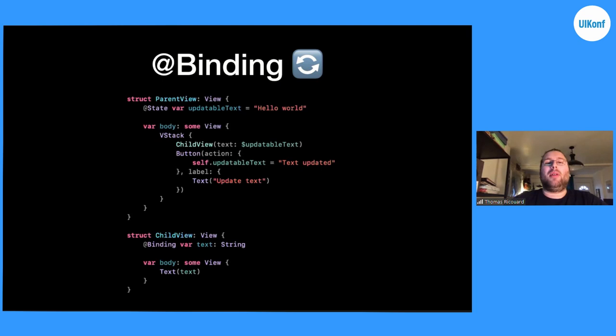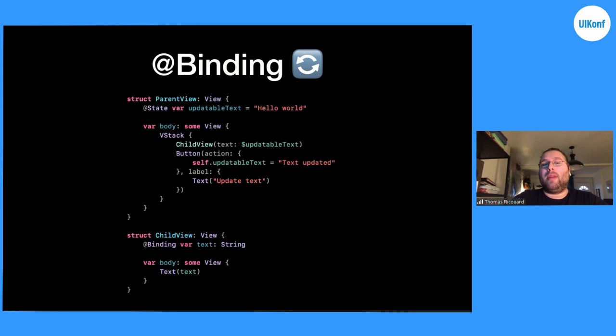Let's see a short code example. As before, we have our parent view, our State, and we have a new child view which takes our State as a Binding. Our child view will take this text and display it. Whenever we click the button, it will update the child view text because we update the State. We could even add the button in our child view and update the binding there, and it will update both the binding and the displayed text.